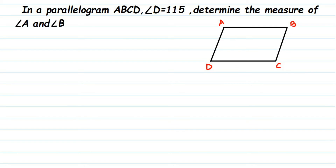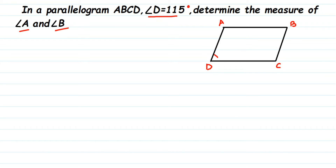Here's a question on parallelogram. In a parallelogram ABCD, angle D is 115 degrees. We have to determine the measure of angle A and angle B. The given value we know is angle D, which is 115 degrees.